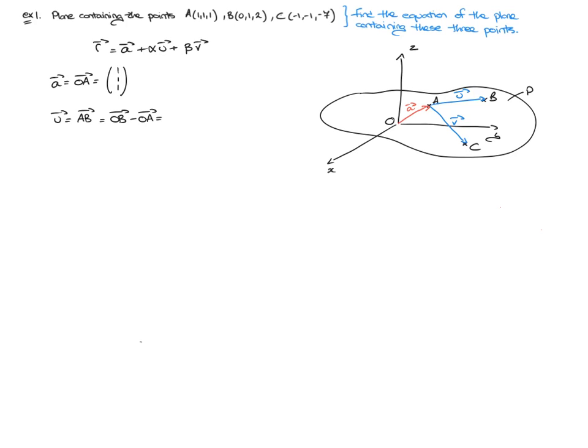So that's going to equal: the x-coordinate of B is zero, the x-coordinate of A is one, so zero minus one will be negative one. The y-coordinates will have one minus one — zero. And the z-coordinates, two minus one — one.